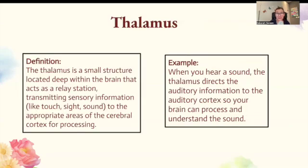The thalamus. The thalamus is a small structure located deep within the brain that acts as a relay station, transmitting sensory information like touch, sight, or sound to the appropriate areas of the cerebral cortex for processing. So when you hear a sound, the thalamus directs the auditory information to the auditory cortex so that your brain can process and understand the sound.